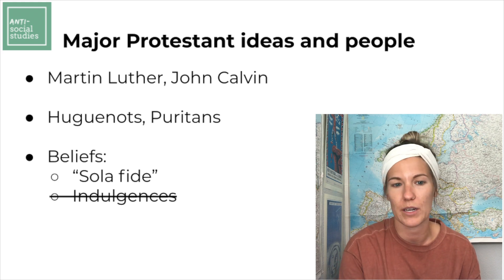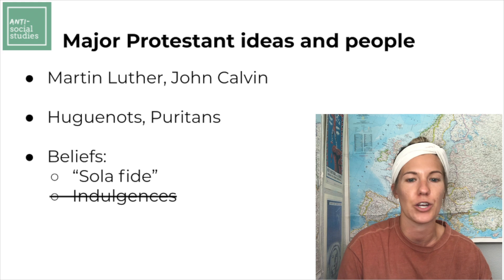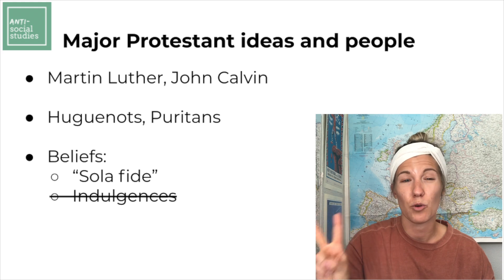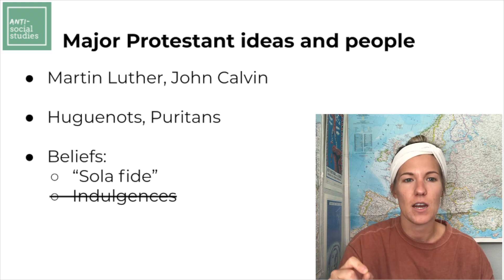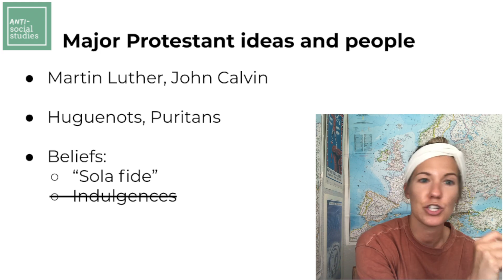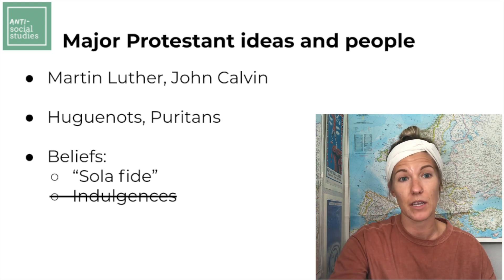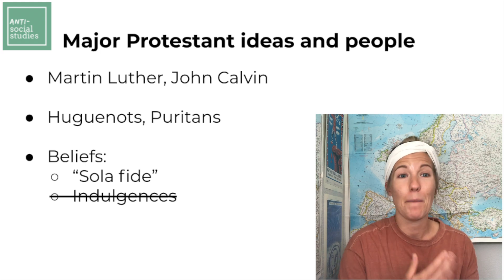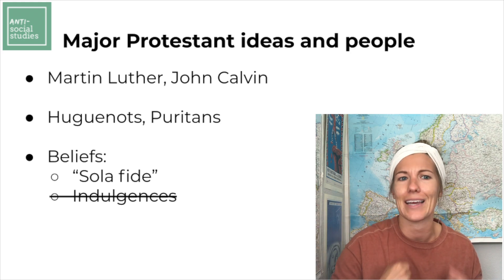Because of this widespread literacy thanks to the printing press, people started reading the Bible on their own and drawing their own conclusions rather than relying on what a bishop or priest told them. Some major Protestant figures you'll encounter: Martin Luther, who kick-started the Protestant Reformation, and John Calvin, who focuses a lot on predestination. Huguenots and Puritans are two other Protestant groups that emerge. A major Protestant belief is sola fide — it is by faith alone that one is saved, not by good works or giving money to the church. Martin Luther said that is not what the Bible says; indulgences — paying money for forgiveness of sins — contradict scripture.